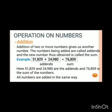So students, we can add the addends in any order but the sum remains the same in every condition. So if we add the above example 51,829 plus 24,980 in another way like 24,980 plus 51,829, we will get the same number that is 76,809 as sum.